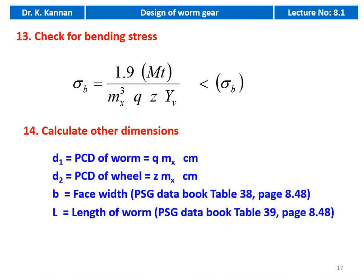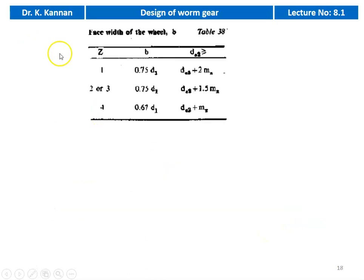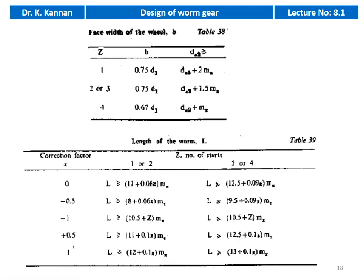Calculate other dimensions of the gear drive: D1 (PCD of worm) = Q × Mx cm; D2 (PCD of wheel) = Z × Mx cm. Take the face width from table number 38, PSG data book, page 8.48. Take the length of the worm from table number 39, PSG data book, page 8.48. The face width table (table 38) and worm length table (table 39) provide values depending on the number of starts and correction factor.